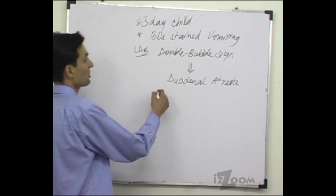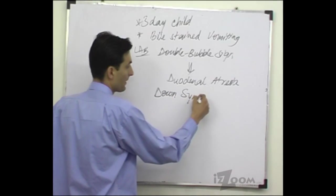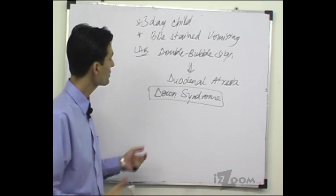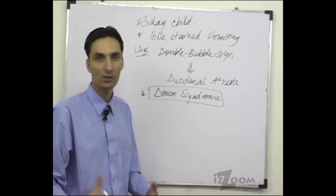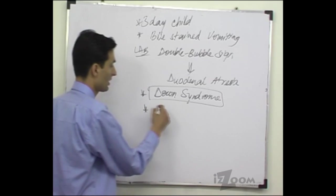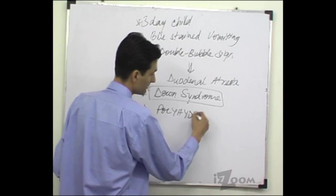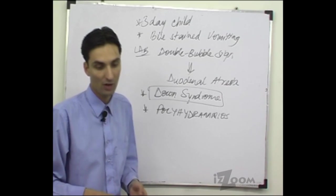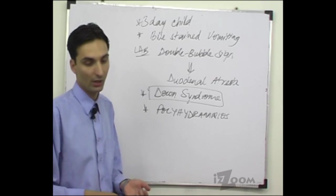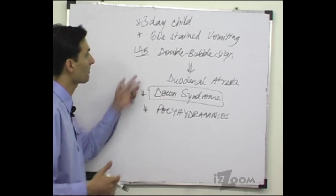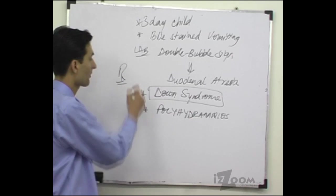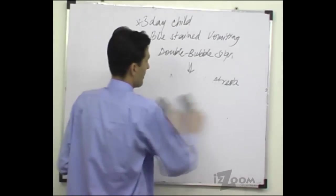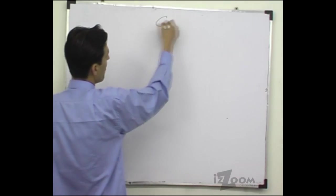An important association of duodenal atresia is Down syndrome — 20 to 30 percent of cases can be associated with Down syndrome. Mothers of children with duodenal atresia also tend to have polyhydramnios during pregnancy. The characteristic finding on abdominal X-ray is the double bubble sign, and treatment is by surgical correction along with fluid and electrolyte balance management.